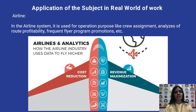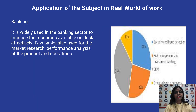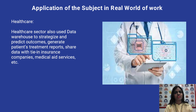The next application of data warehouse is in the airline industry, where it is used for operational purposes like crew assignment, analysis of route profitability, frequent flyer programs, promotions, etc. Next is the banking application, where data warehouses are widely used to manage resources available on desks effectively. Banks also use it for market research and performance analysis of products and operations. The most important operation in banking is fraud detection and security. The next application is healthcare, where data warehouses are used to strategize and predict outcomes, generate patient treatment reports, share data with insurance companies, medical aid services, etc.